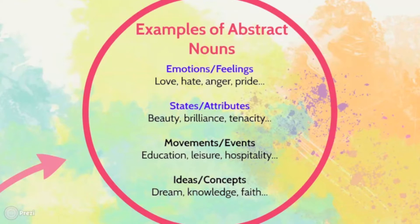Those are things we comment about people in particular — the attributes that people have — and they are all abstract nouns. We also have movements or events, things like education, leisure, or hospitality, and ideas and concepts such as to dream or to have knowledge. They are all abstract nouns: they are nouns but things we cannot physically interact with.